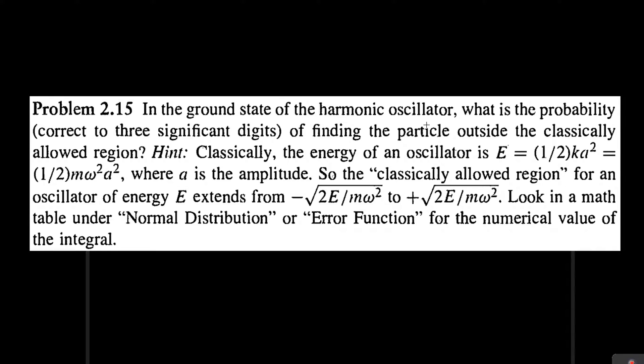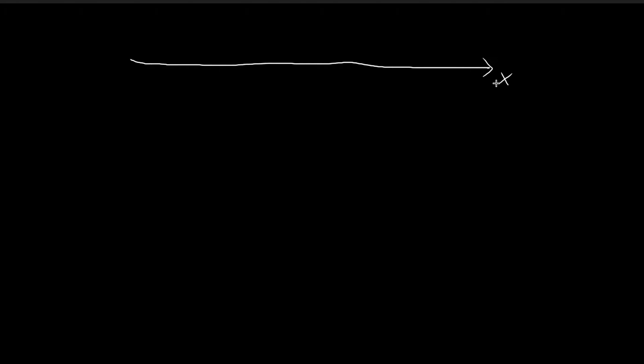In this problem, we are going to compare the quantum and the classical harmonic oscillator. For the harmonic oscillator, you can imagine there being an x-axis, with x equal to zero at the center, and a potential equal to one-half m omega squared x squared.